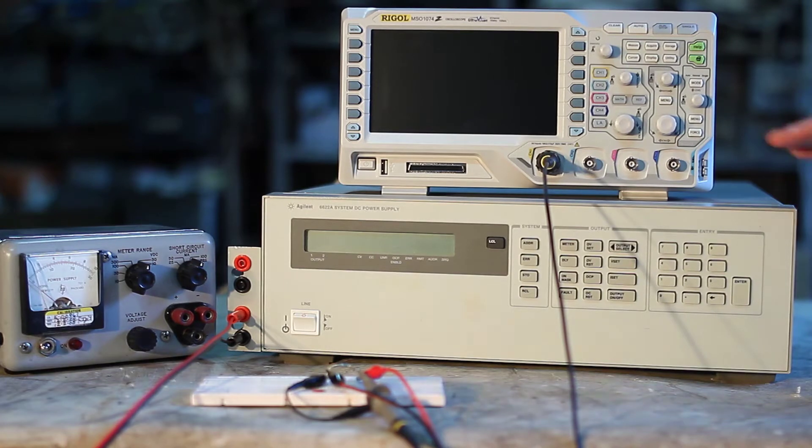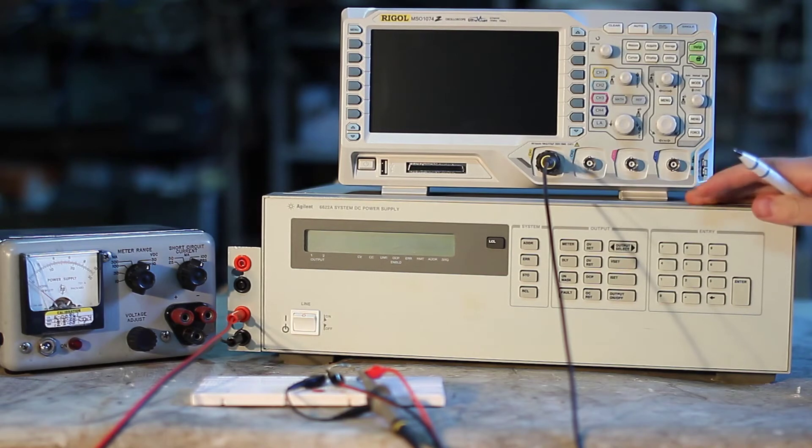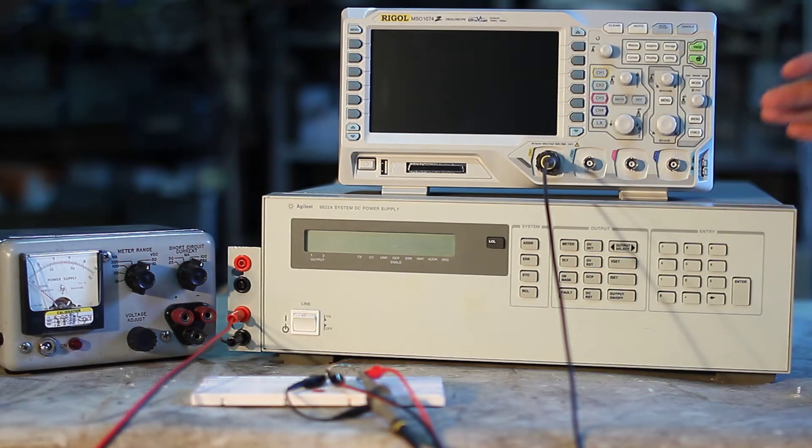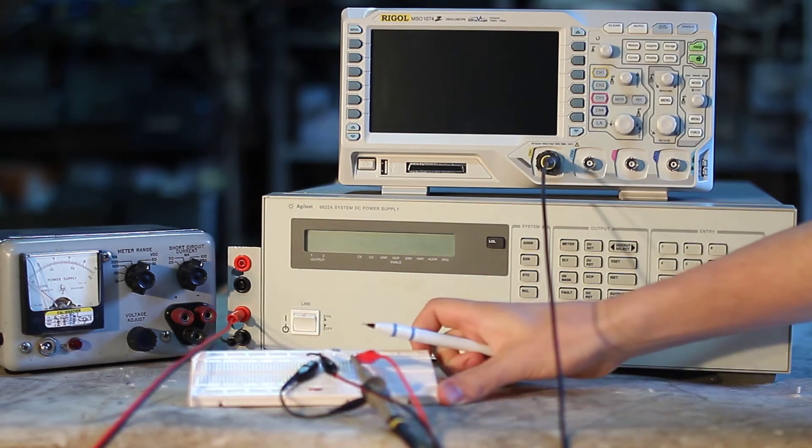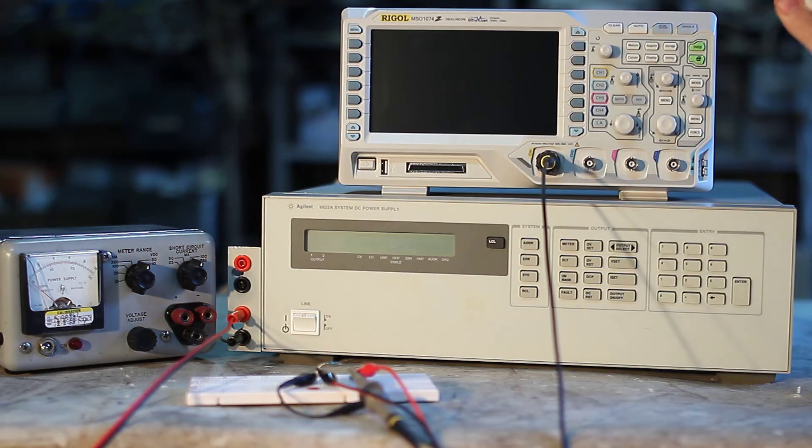One interesting test that we can do is to measure the transient response of the current limiting circuit. In this test I am going to set the supply to output 12V and limit the maximum current to 100mA. Then I am going to short its output across a 1 ohm shunt resistor, which we will use to measure the current.